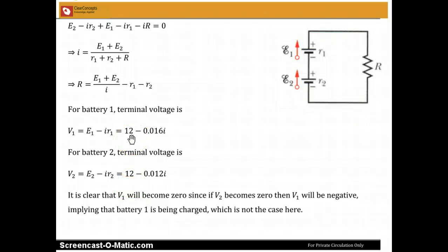Now comparing these two expressions, 12 minus 0.016i and 12 minus 0.012i, it's clear that V1 will become zero. Since if V2 becomes zero, V1 will turn out to be negative, and if V1 is turning out to be negative, that implies that battery 1 is being charged, and you can see that that is not the case here.